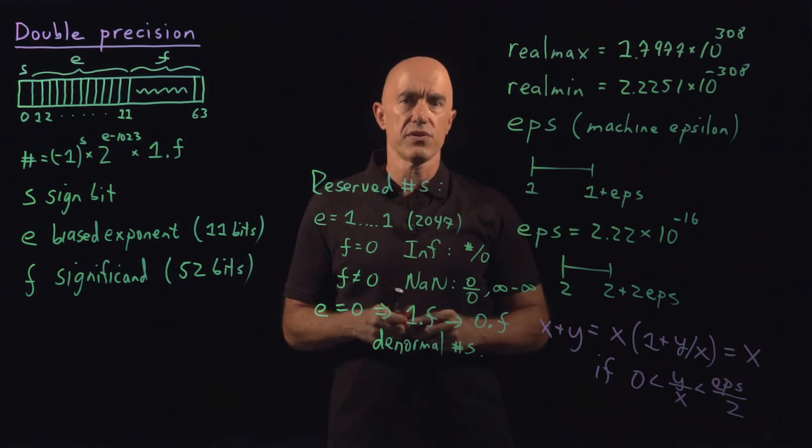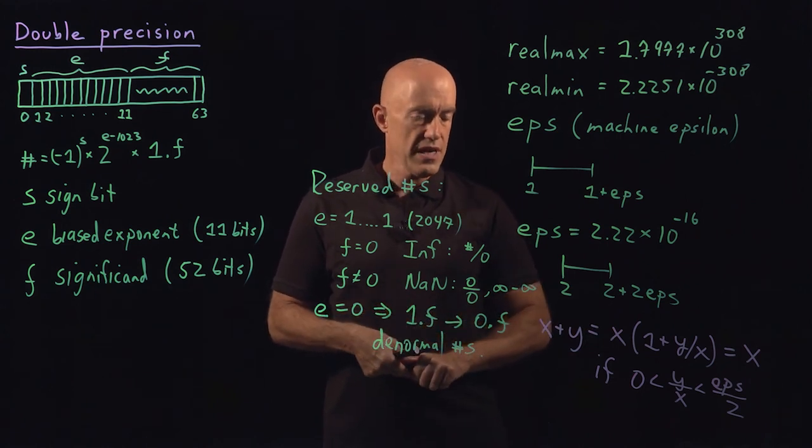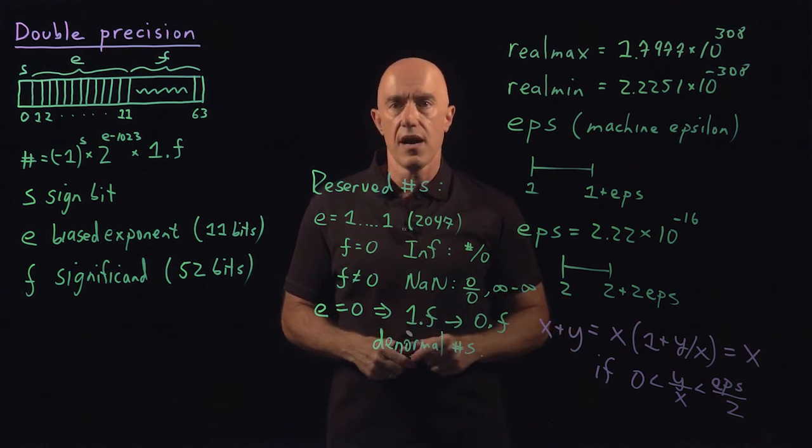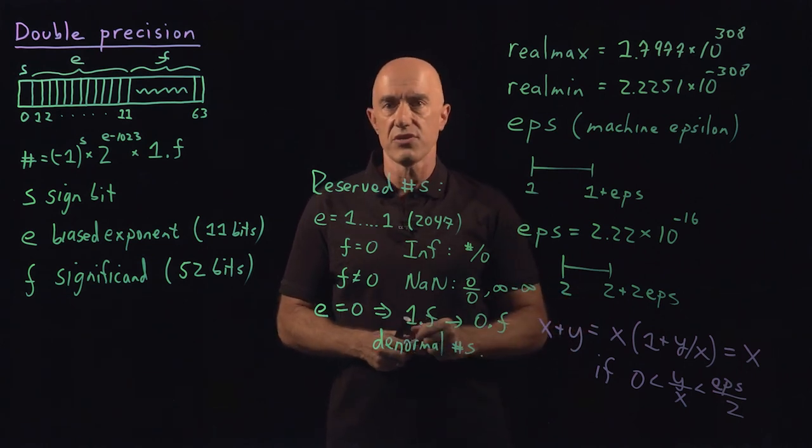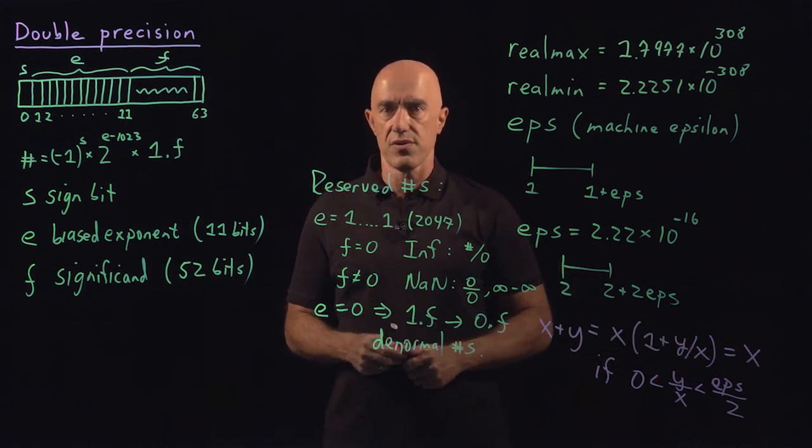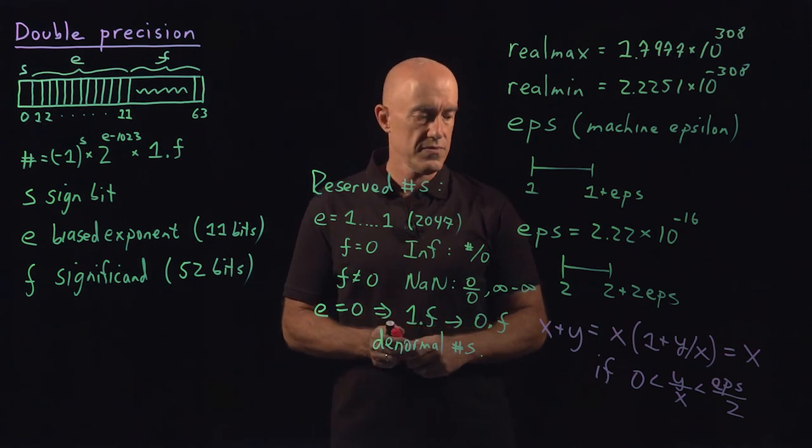This is important to know for round-off error. If you try to add a small number to a very large number, you may not change the large number if y over x is smaller than machine epsilon over 2. This is a real source of errors.